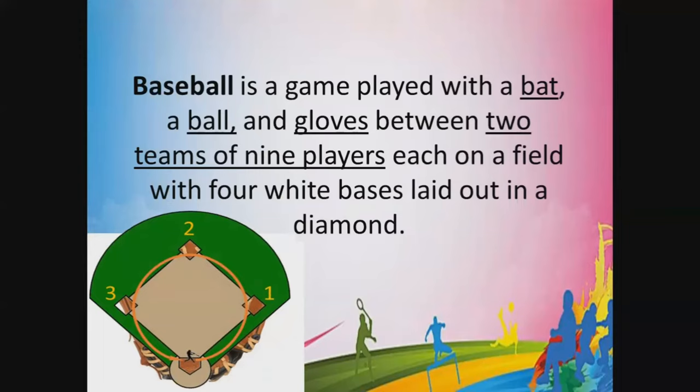This is how the playing ground of baseball looks like. It is diamond-shaped, and of course, there are four white bases: the first base, second base, third base, and of course, the home plate.